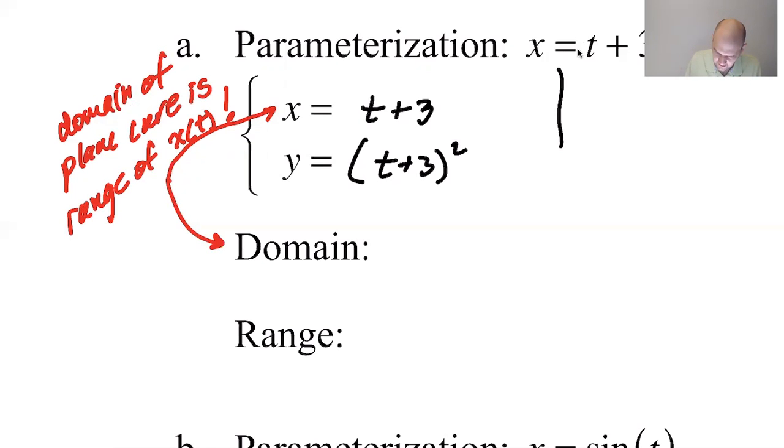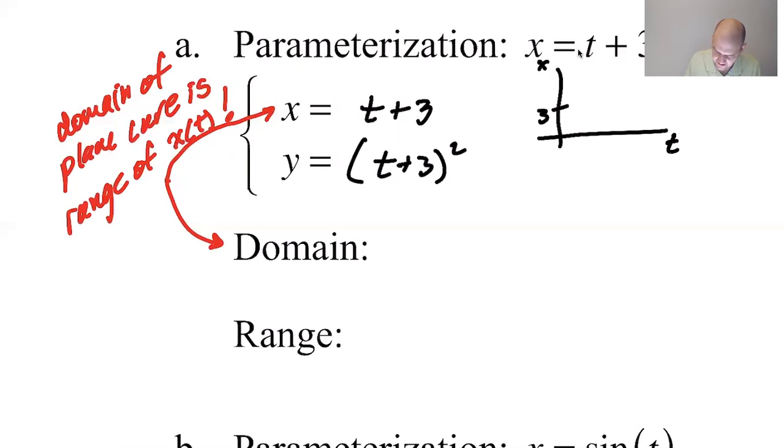So three, this is x, this is t, kind of looks like this. The range of that graph is all reals, which means x can be any real number. So this will be x is an element of the reals.